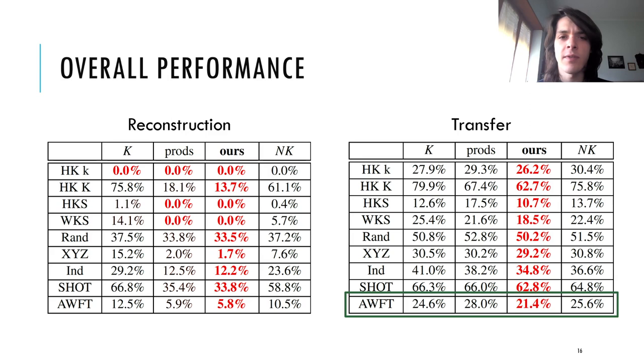About transfer, this is the task where we can see the higher difference between the eigenproducts before and after the orthogonalization, especially look at the heat kernel signature, the SHOT, and the AWFT descriptor.